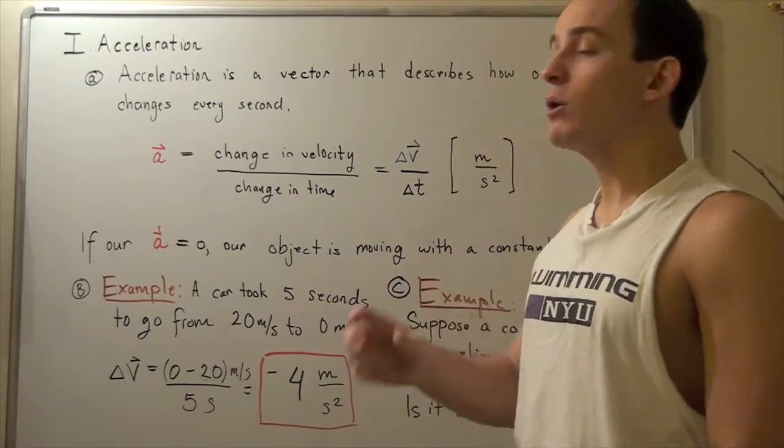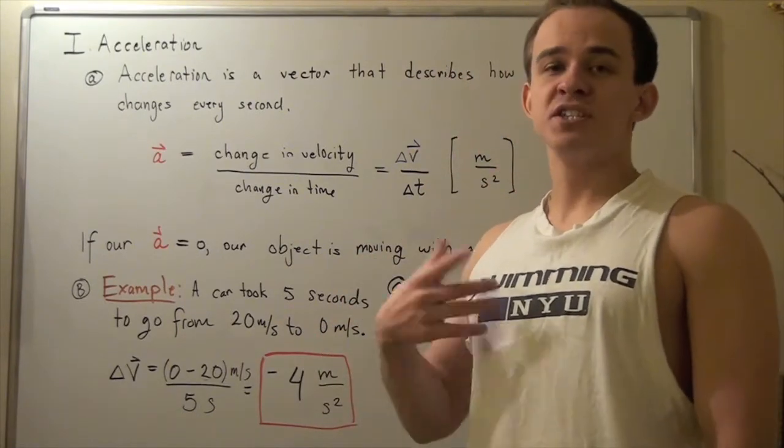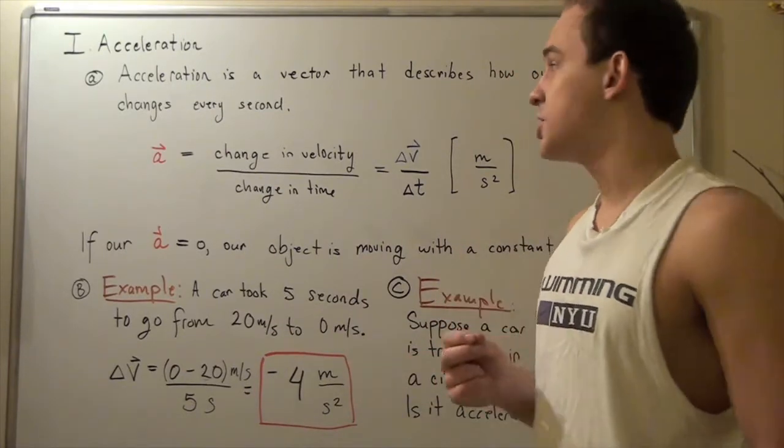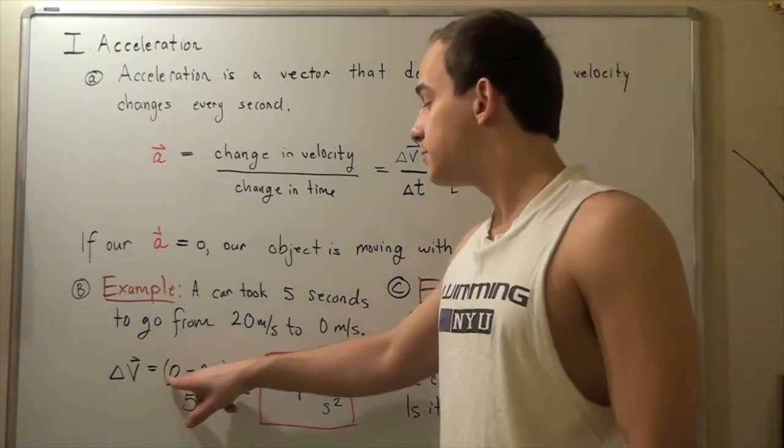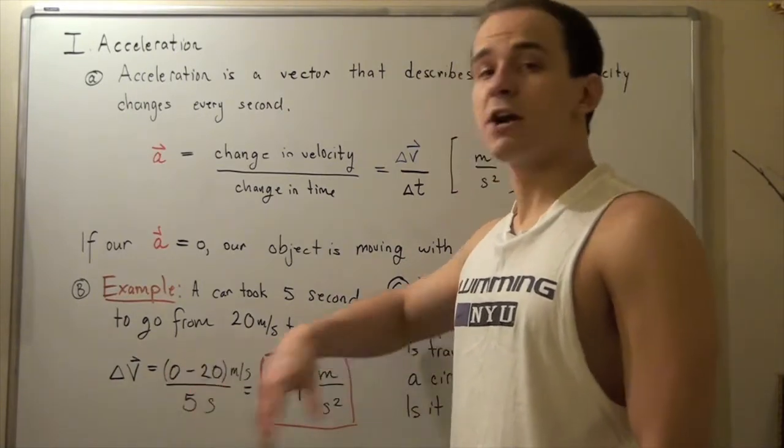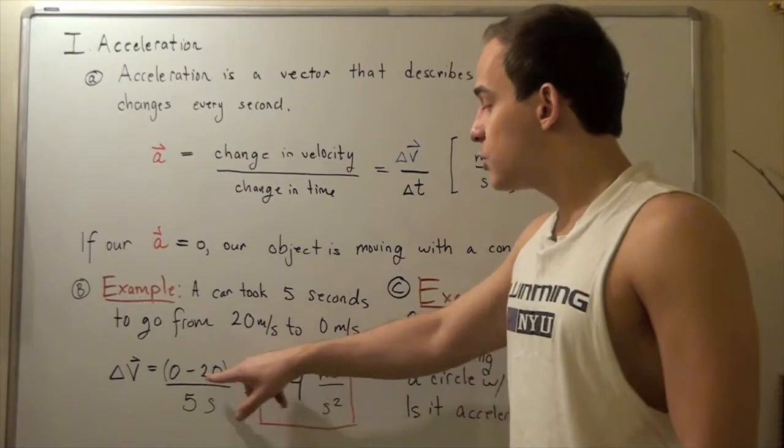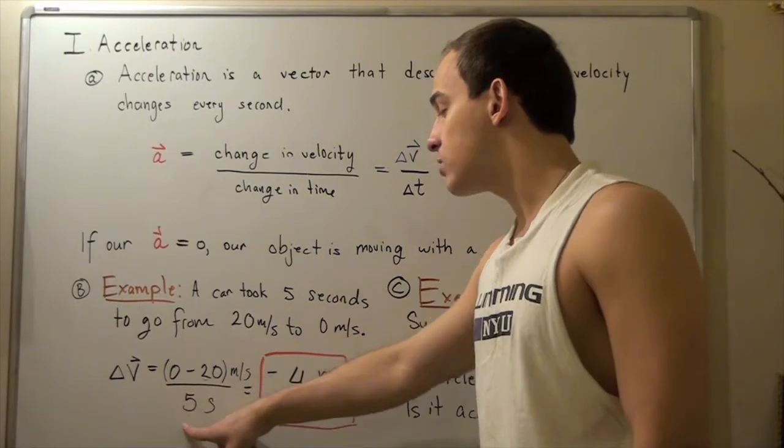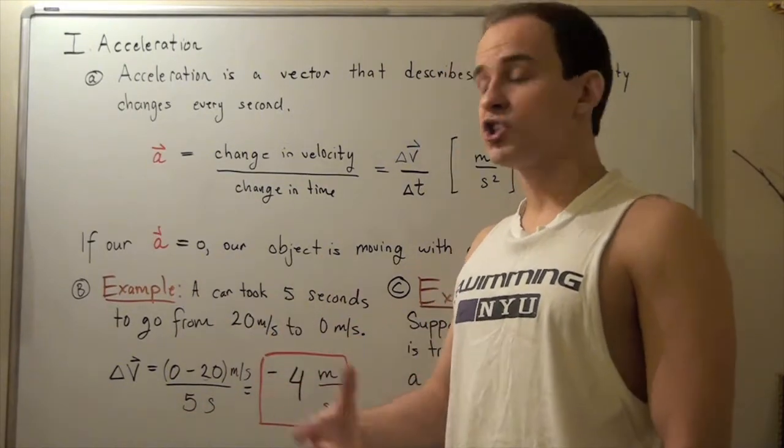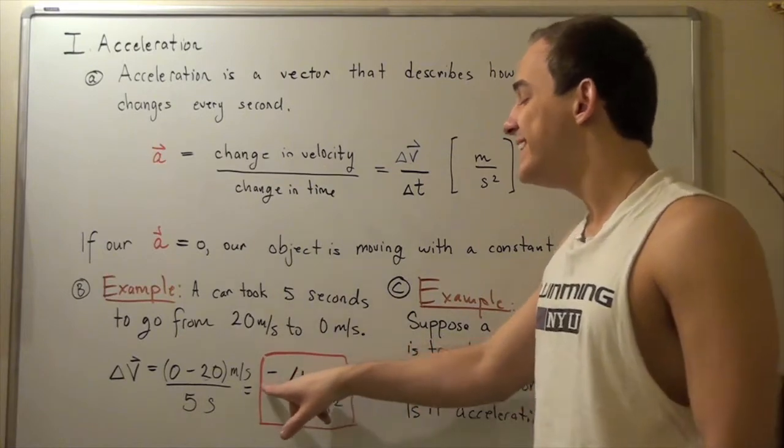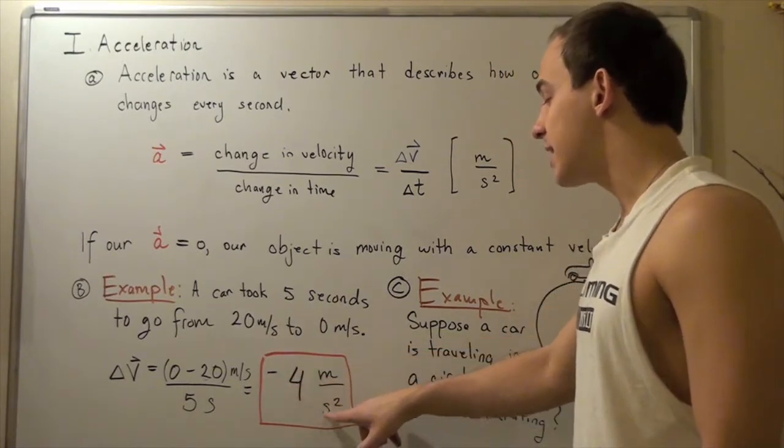Let's find the deceleration, which is simply acceleration in the reverse direction. To find it, we subtract zero minus 20 because zero is our final velocity and 20 meters per second is our initial velocity, and divide that by the total time it took. We get negative 4 meters per second squared.